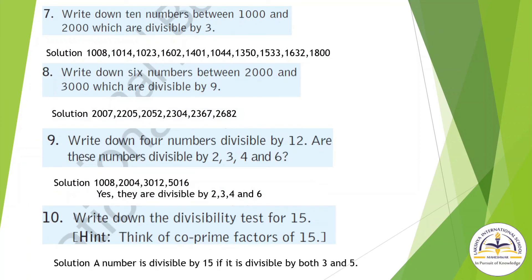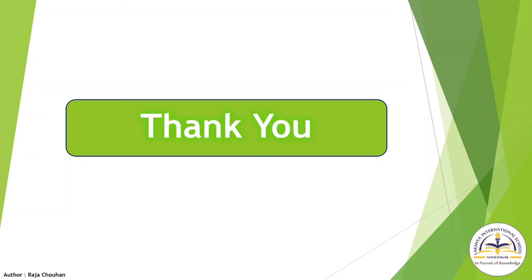Question number 7: write down 10 numbers between 1000 and 2000 which are divisible by 3. Write down 6 numbers between 2000 and 3000 which are divisible by 9. Write down 4 numbers divisible by 12 — are these numbers divisible by 2, 3, 4, and 6? Here you can write the 4 numbers and check. Write down the divisibility test for 15: a number is divisible by 15 only if it is divisible by both 3 and 5.